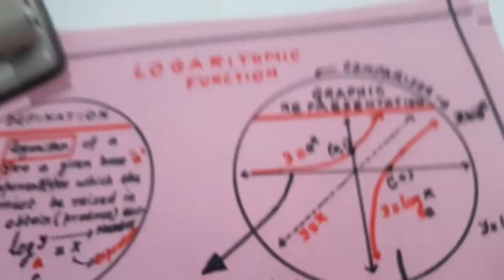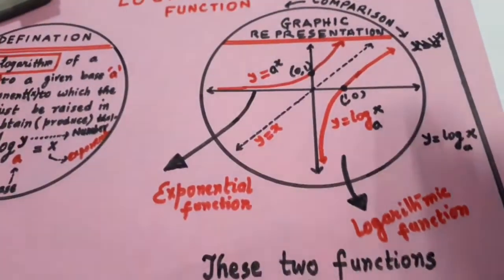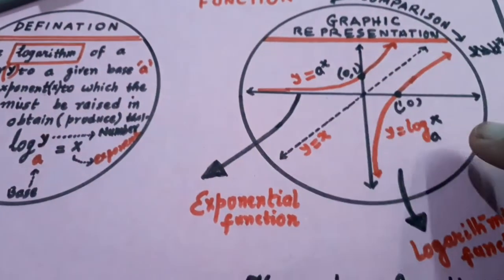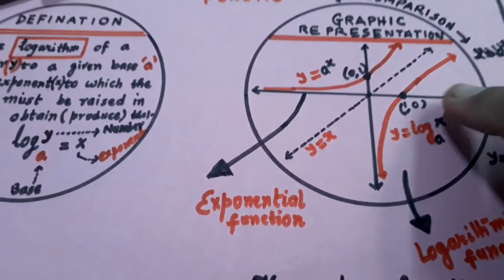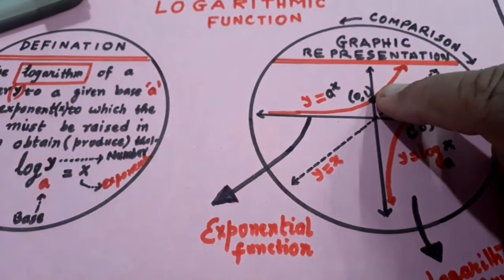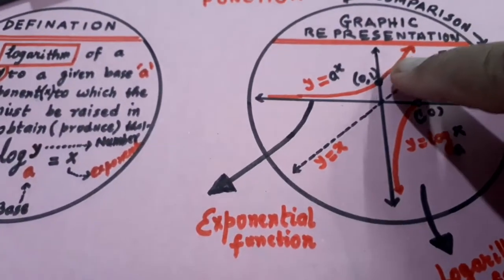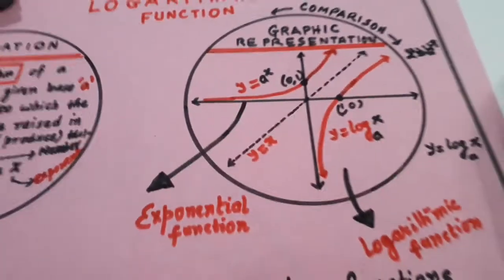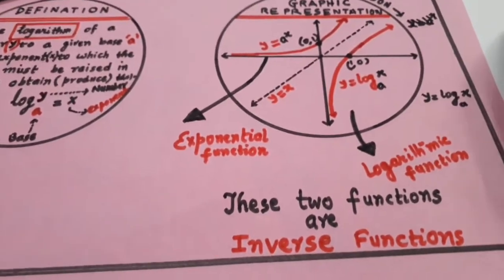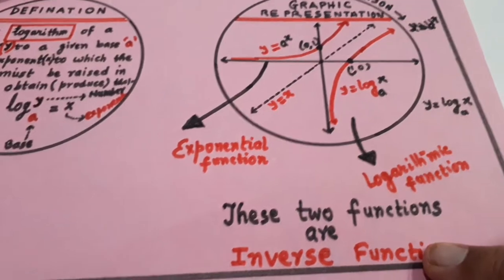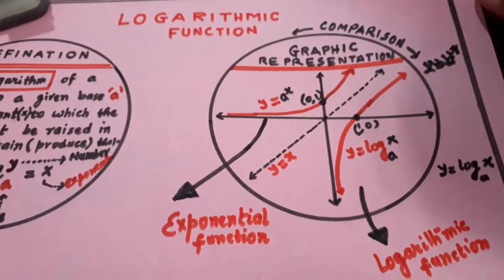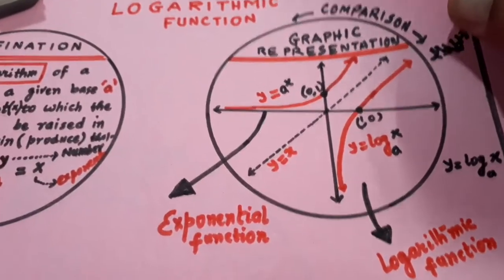Okay, now they are inverse of each other. Look at the graph: exponential function ka graph, it passes through (0,1), and this graph passes through (1,0). Y equal to x is like a mirror. If you see its image in the mirror, you'll see the other one. Its image will be the other one. You know that in a mirror, the image is reversed. So they are inverse of each other, these two are inverse functions. This is how you can find out that the two functions are images of each other.